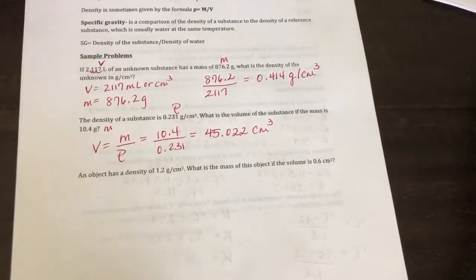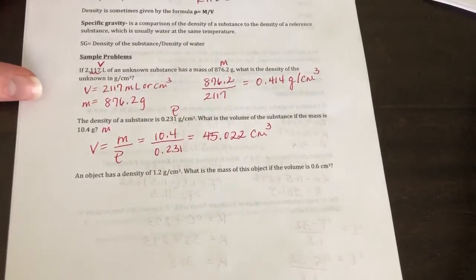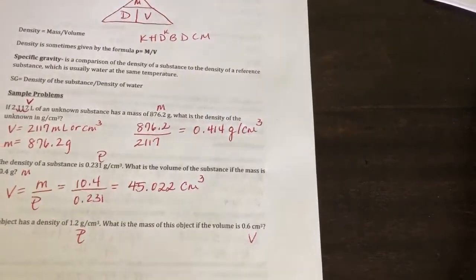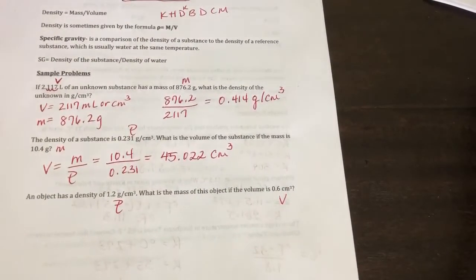So it says, an object has a density of 1.2 grams per centimeter cubed. What is the mass of the object if the volume is 0.6 centimeter cubed? Okay, so we're given our density and we're given our volume. Centimeter cube is volume. We're looking for mass.